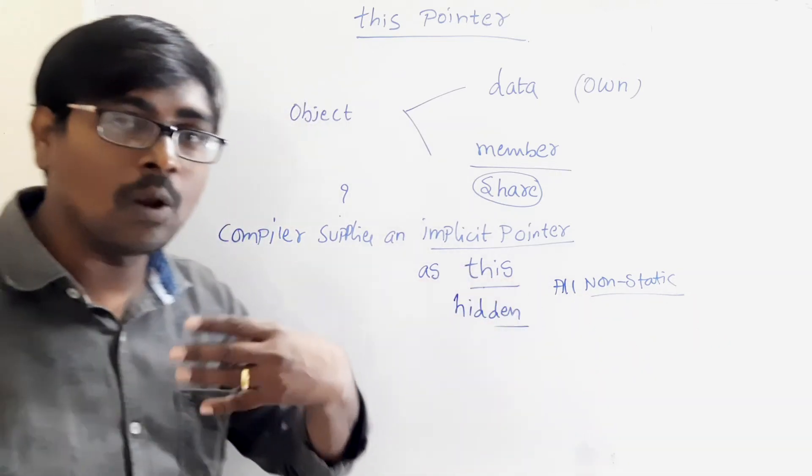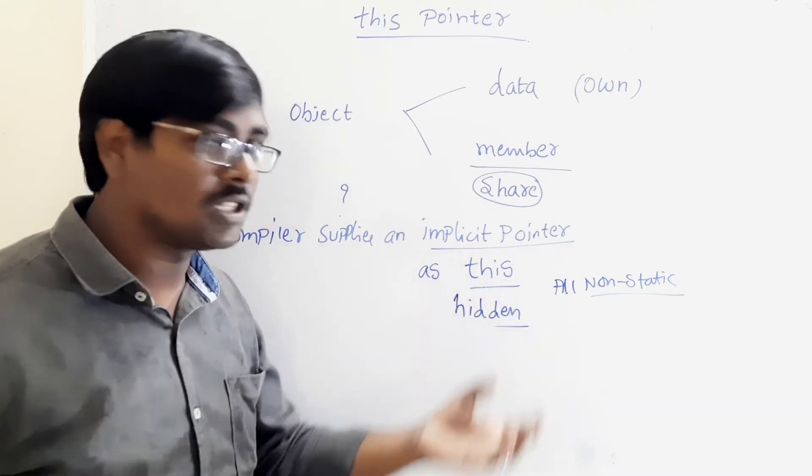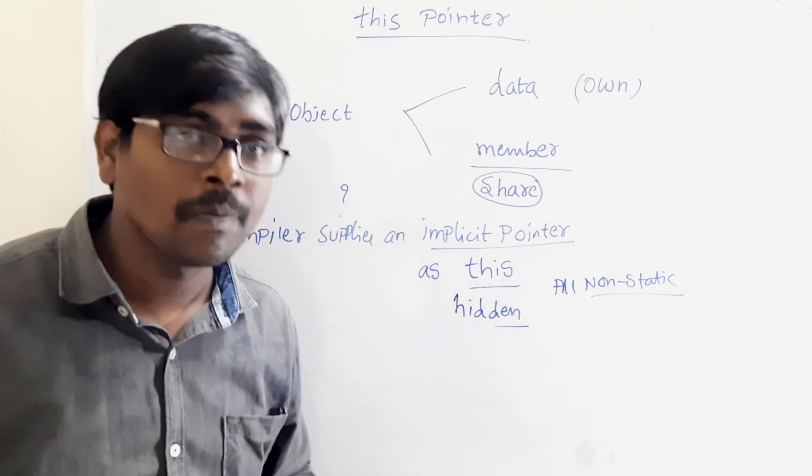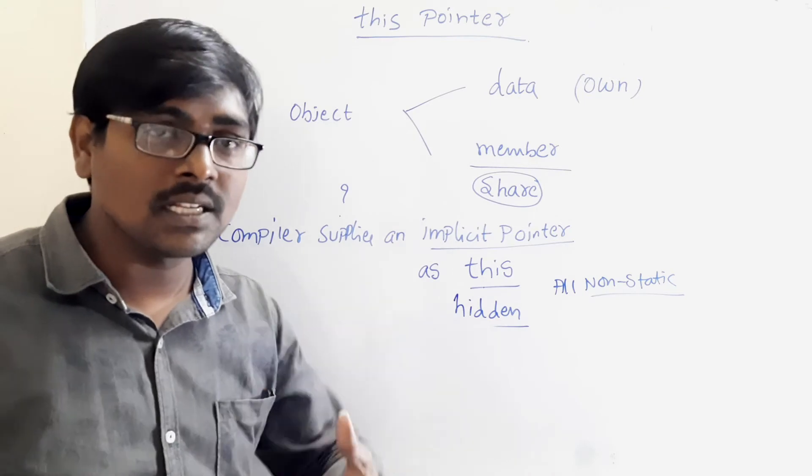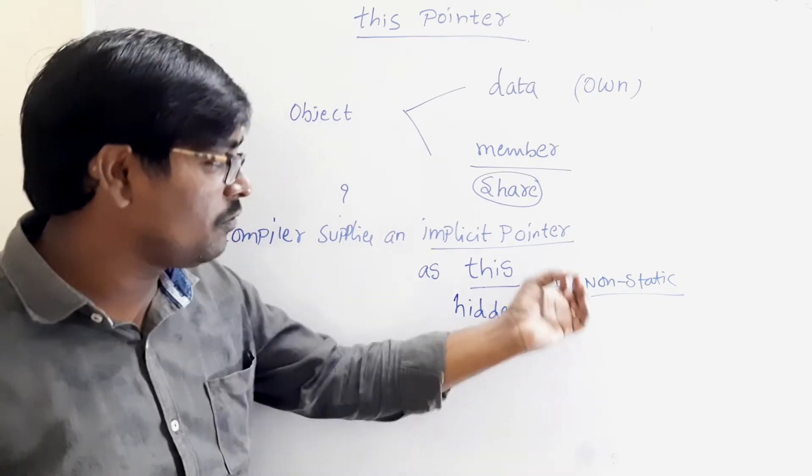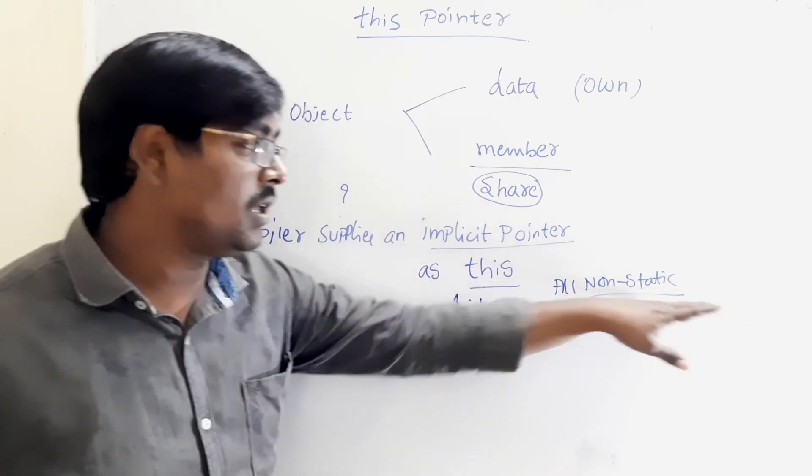And this is a local variable. That means, the this pointer acts as, once we pass it as an argument, internally this acts as a local variable within the body of the non-static member.